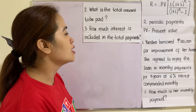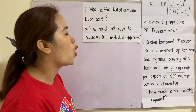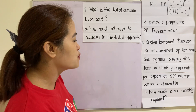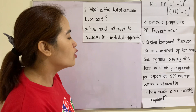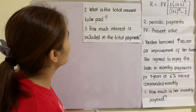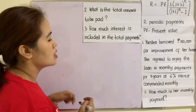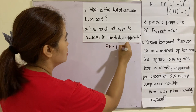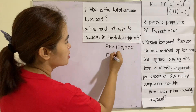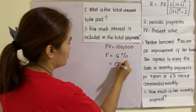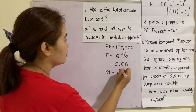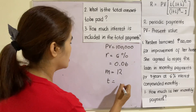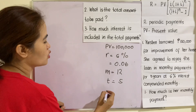Example number one: Kirsten borrowed 100,000 for improvement of her home. She agreed to repay the loan in monthly payments for five years at six percent interest compounded monthly. We have three questions: how much is her monthly payment, what is the total amount to be paid, and how much interest is included in the total payments? Let us identify the given values: PV is 100,000, r is six percent or 0.06, m is 12 since it says monthly, and t is five years.